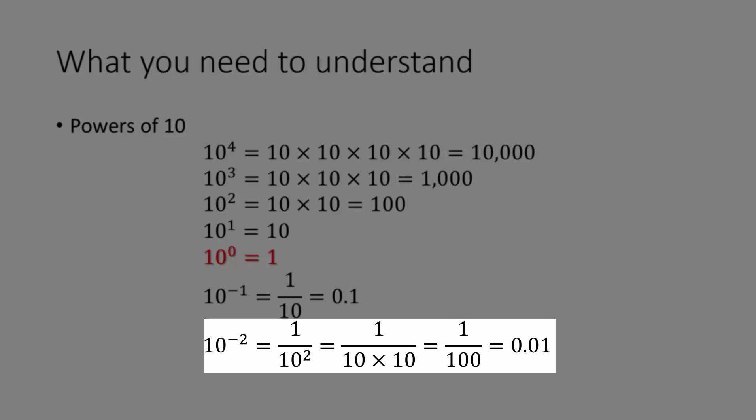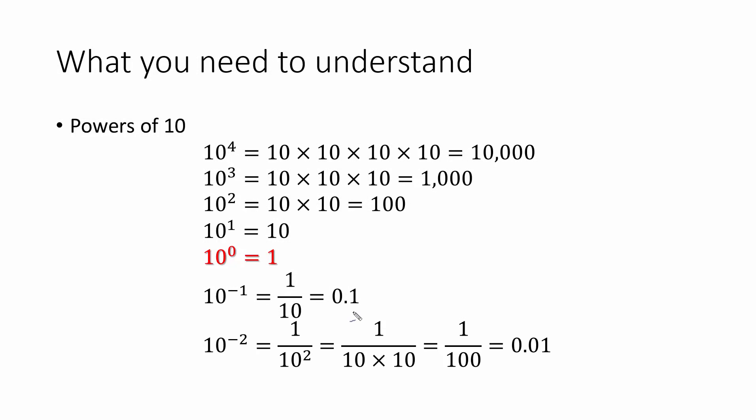In the case of negative exponents, there's a correlation between the number of decimal places to the right of the decimal and the exponent. For example, 0.1 has 1 decimal place, and the power was negative 1. 0.01 has 2 decimal places, and the power was negative 2.